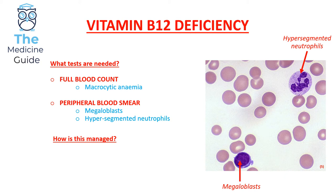In terms of management of a vitamin B12 deficiency, we need to replace it with exogenous vitamin B12 in the form of intramuscular hydroxycobalamin. One gram of intramuscular hydroxycobalamin is given three times each week, and then once every three months. That's a nice short summary of vitamin B12 deficiency.